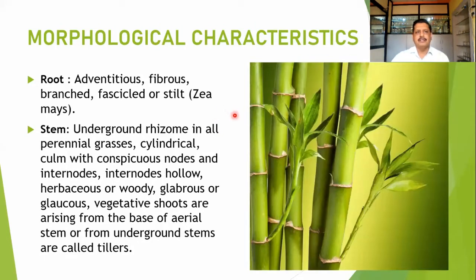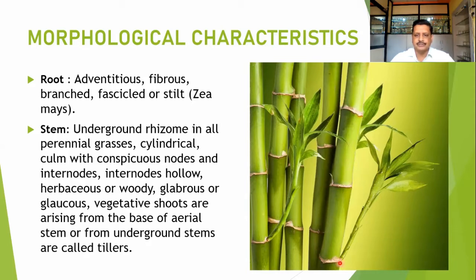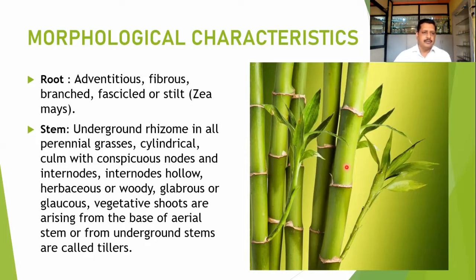Morphologically, since this is a monocot, adventitious and fibrous roots are observed in this family. In some members like Zea mays, fascicle roots or stilt roots can be found. The stem is mostly an underground rhizomatous stem in perennial grasses, cylindrical with conspicuous nodes and internodes. The internodal region is mostly hollow and fistular, while the nodes are solid. Plants may be glabrous or glaucous.